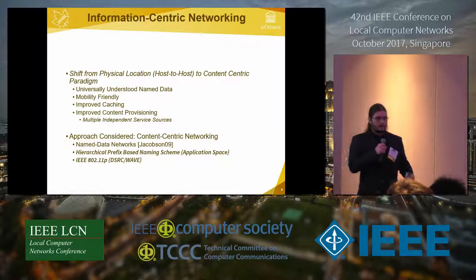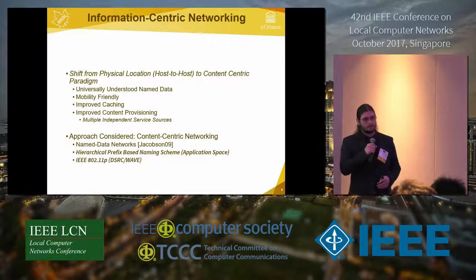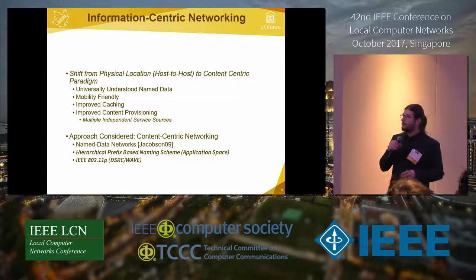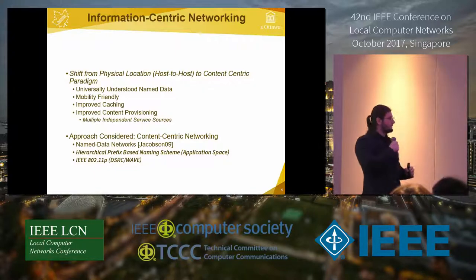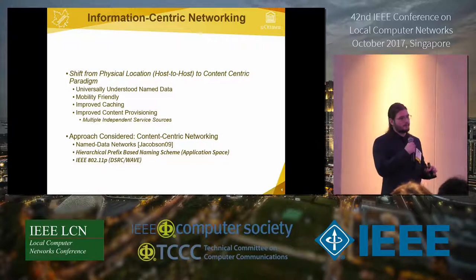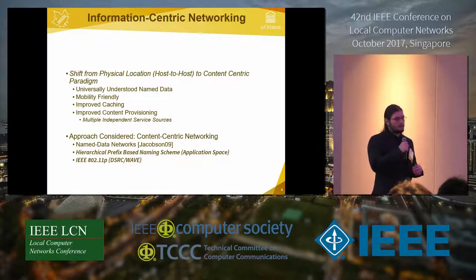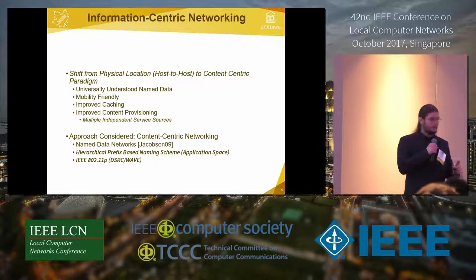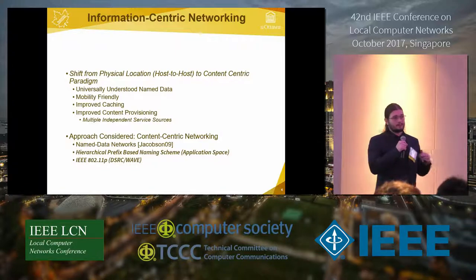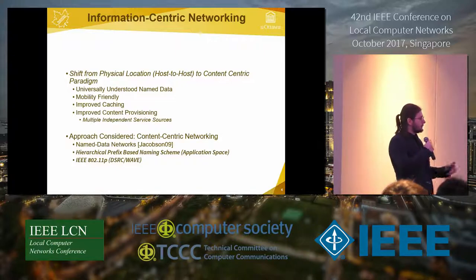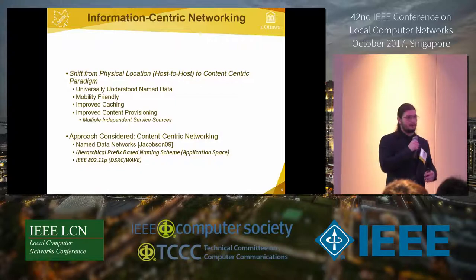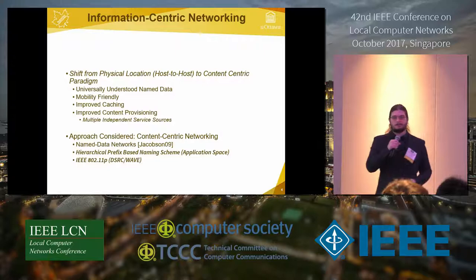A very promising alternative is information-centric networking (ICN), a concept that shifts from physical location or host-to-host communication to an information- or content-centric paradigm. All communication is based on named data — objects within the network have universally recognizable names. Because naming doesn't relate to a specific location but to content, it is mobility-friendly. Consistent naming also improves caching, specifically in-network caching, and improves content provisioning, with intermediate nodes acting as potential content providers.